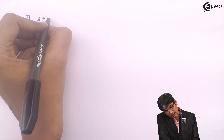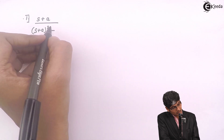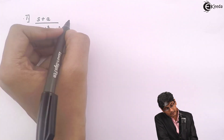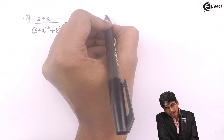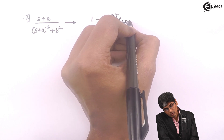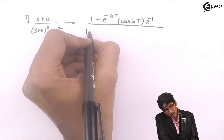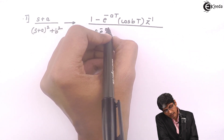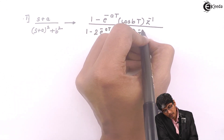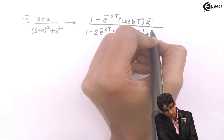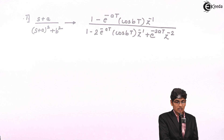The first formula is: (s + a) divided by [(s + a)² + b²]. This will get converted — the solution of this equation will be [1 - e^(-aT) cos(bT) · z⁻¹] divided by [1 - 2e^(-aT) cos(bT) · z⁻¹ + e^(-2aT) · z⁻²]. This is the first formula.